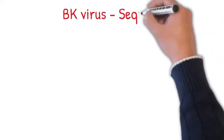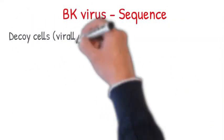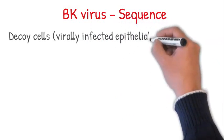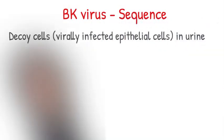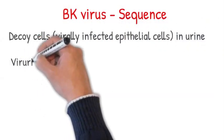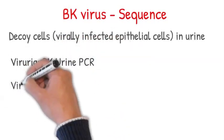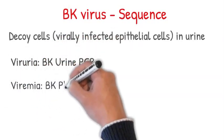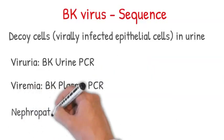The sequence of infection progression is as follows. It starts with decoy cells, which are virally infected epithelial cells appearing in urine. Then viruria, which is detected by BK urine PCR. Then viremia, which is detected by BK plasma PCR, and then nephropathy.